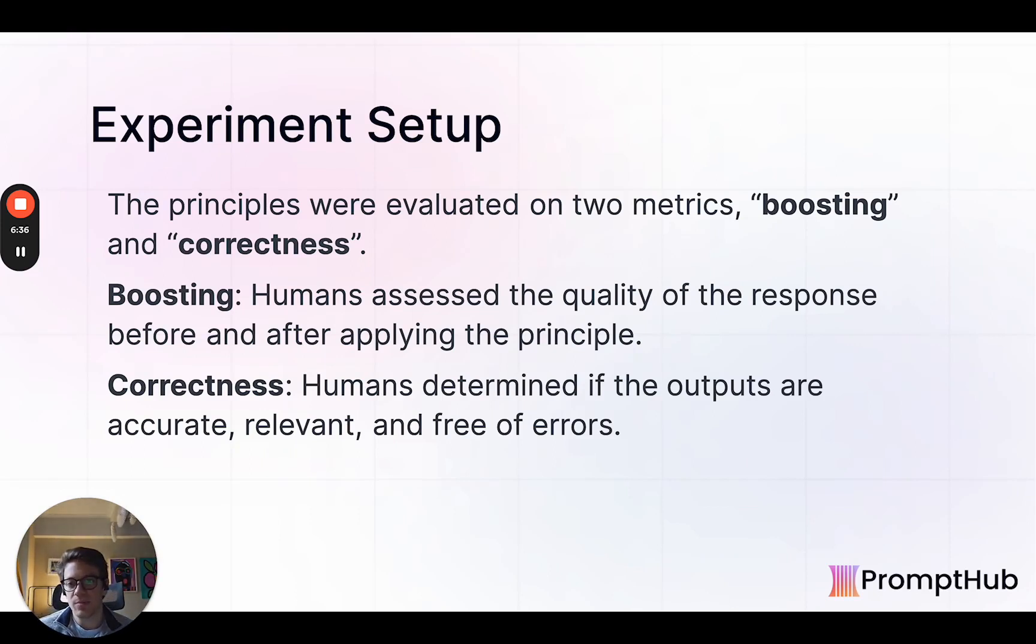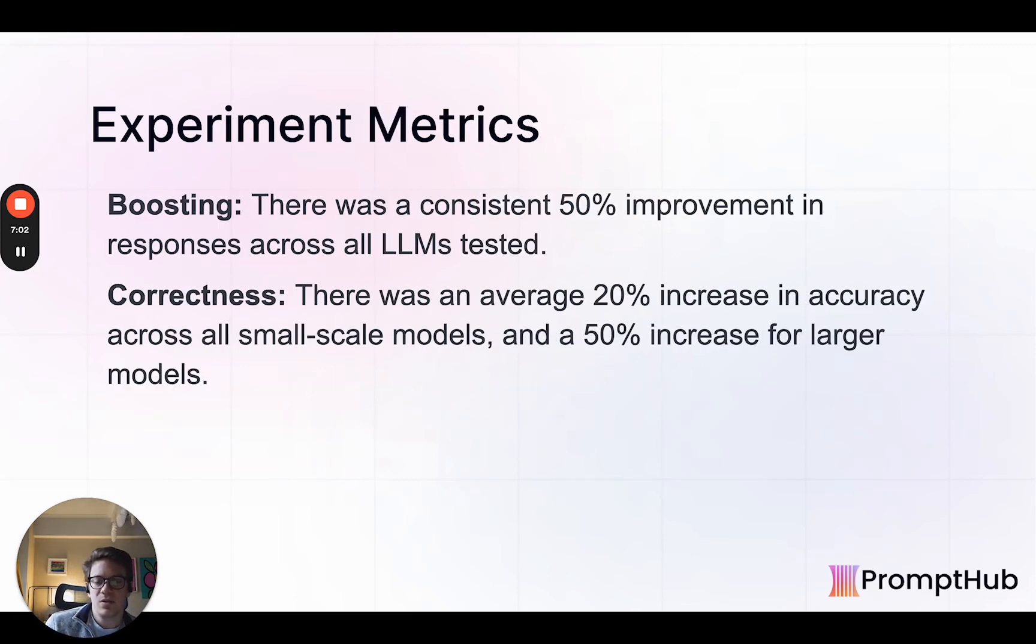So the experiments were set up to judge two metrics basically. So all the evaluations were done by humans. They would judge the quality of the response before and after on some scale for the boosting metric. And for correctness, they would determine if it was accurate, relevant and free of errors. So they judged on these two metrics of before and after. Overall, 50% improvement across responses for the boosting metric. And for correctness, 20% on the smaller models, 50% for larger. They tested a wide range of models, which we'll dig into a little bit more.